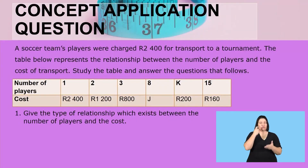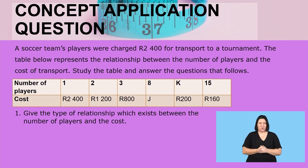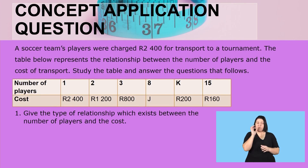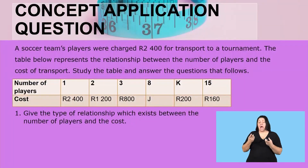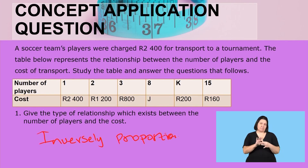A soccer team's players were charged 2,400 rent for transport to a tournament. The table represents the relationship between the number of players and the cost of transport. Give the type of relationship. As the number of players increases, the cost is decreasing. Therefore, the type of relationship is inverse or inversely proportional.